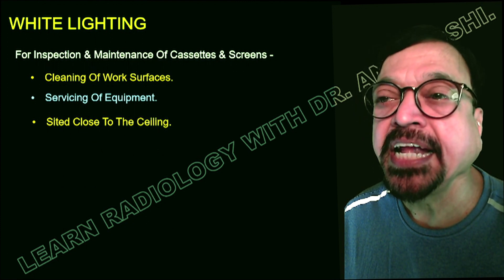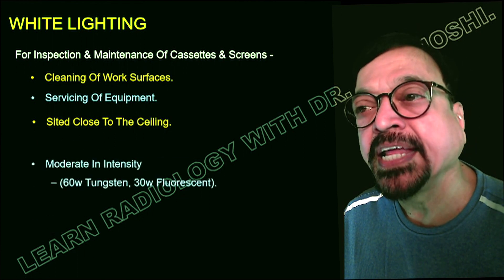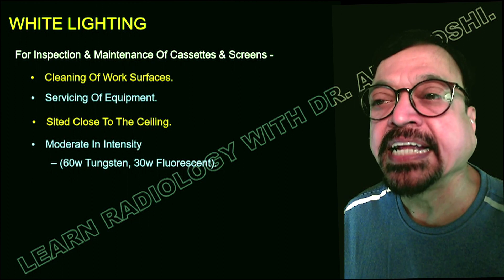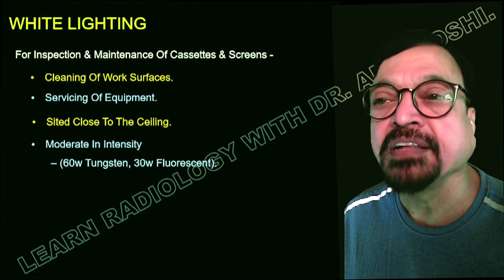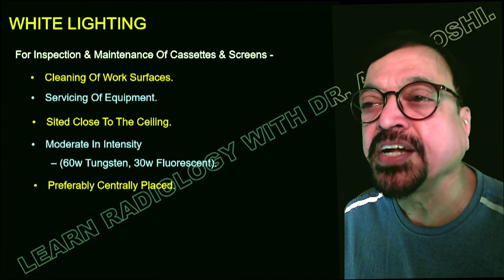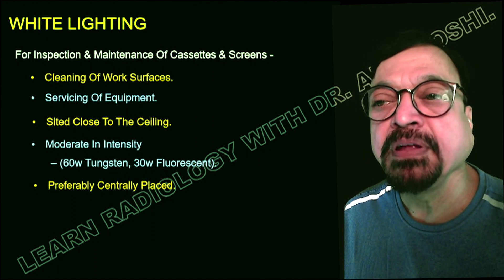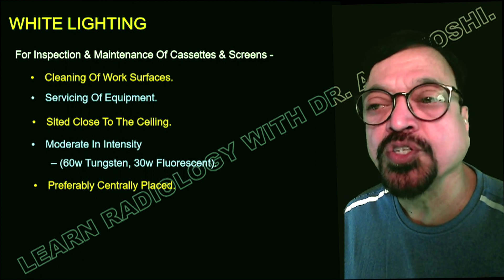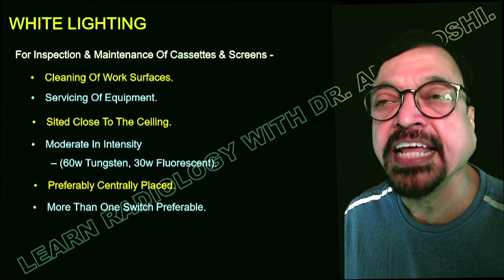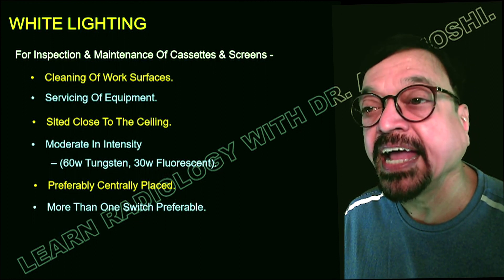The white light is situated close to the ceiling so that the entire dark room will get illuminated. It has got moderate intensity — that depends on the convenience and the size of the dark room and where the light is situated. It can be from 30 watt to 60 watt. It is preferably centrally situated because every corner needs to be illuminated by it, so it has to be central as well as as high on the ceiling as possible.